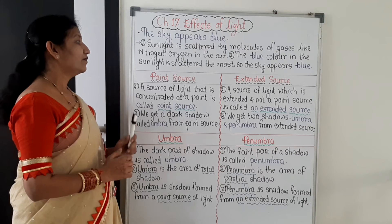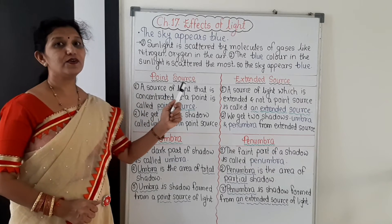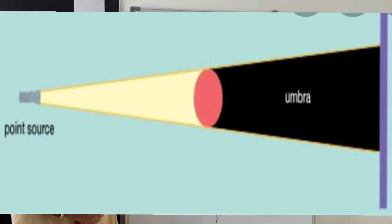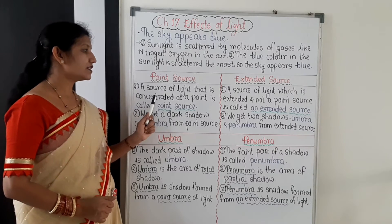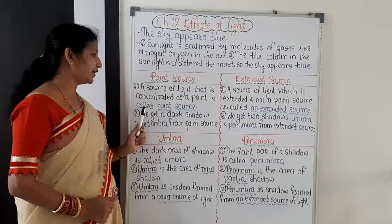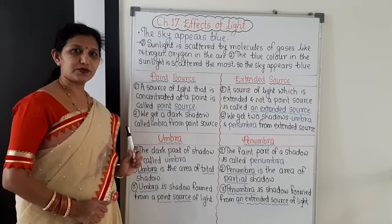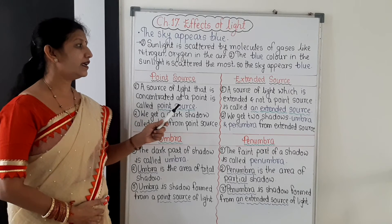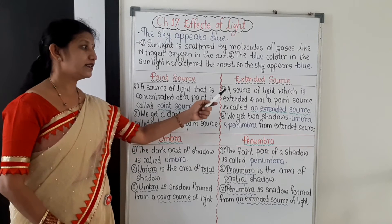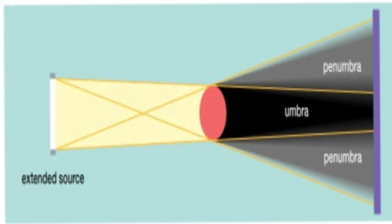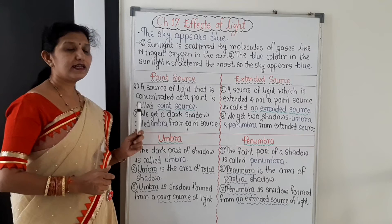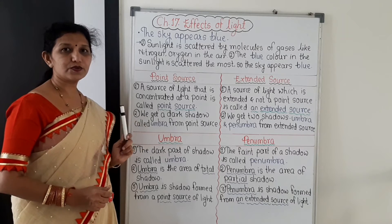A source of light that is concentrated at a point is called a point source. Whereas, an extended source of light is a source of light which is extended and not a point source — it is called an extended source of light.